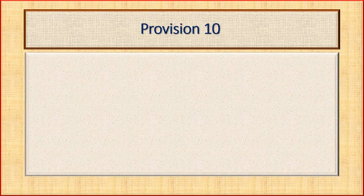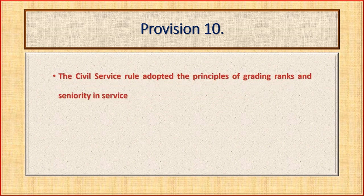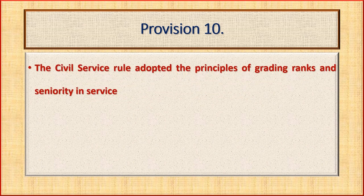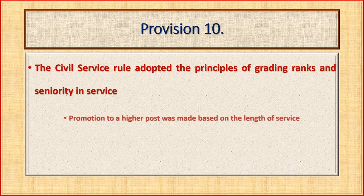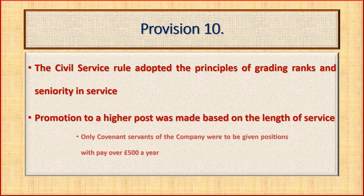The rules in Provision 10 were the following: the civil service adopted the principles of grading ranks and seniority in service. Promotion to a higher post was made based on the length of service. Only covenant servants of the company were to be given positions with pay over £500 a year.